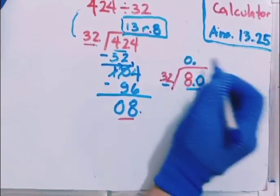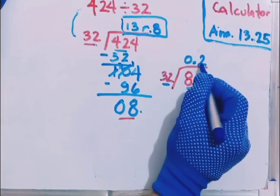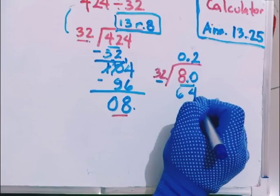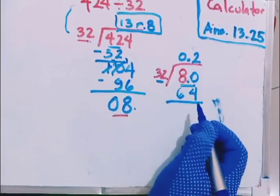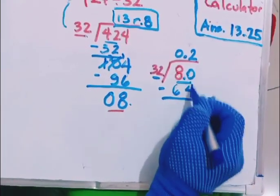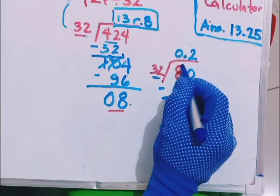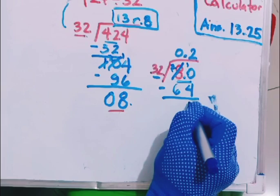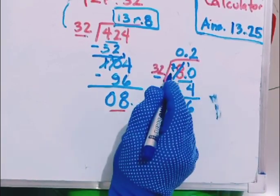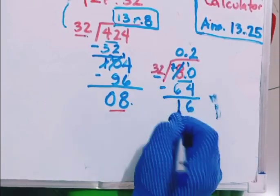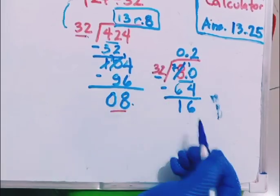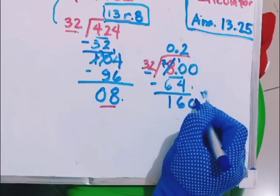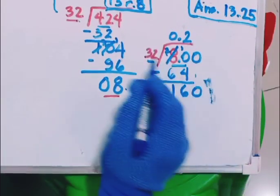So what is 80 divided by 32? That is 2. 2 times 32 is 64. Now we have to subtract. 0 minus 4 cannot be, so we have to borrow again. This will become 7, then this becomes 10. 10 minus 4 is 6. 7 minus 6 is 1.